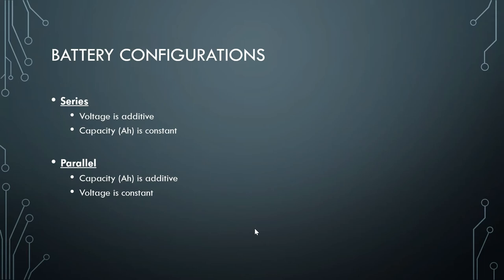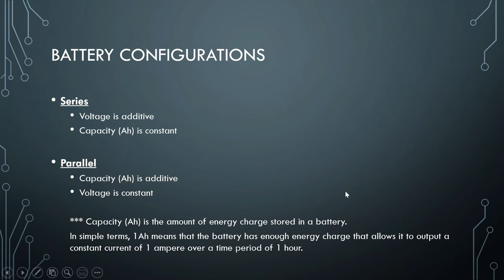What is capacity? Capacity is measured in ampere hours. It is the amount of energy charge stored in a battery. For example, if we have a battery with a capacity of 1 ampere hour, that means it has the capacity to output a constant current of 1 ampere for a period of 1 hour. So 1 Ah equals 1 ampere for 1 hour.